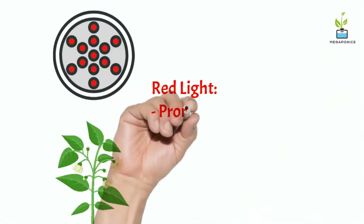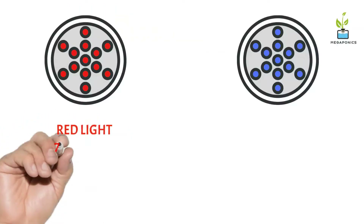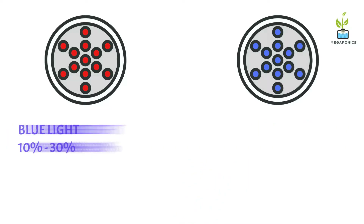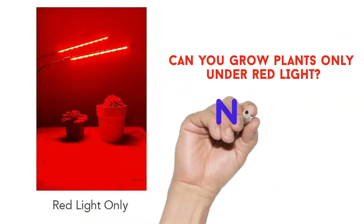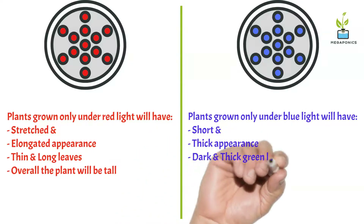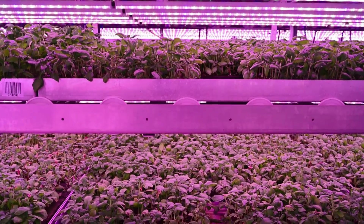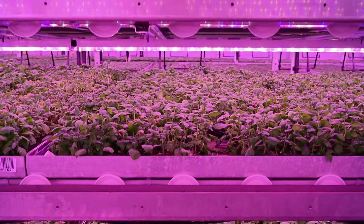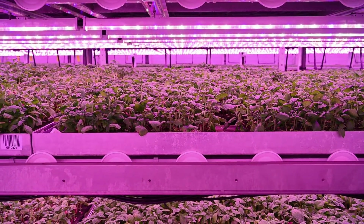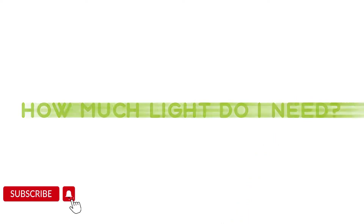Red light helps in promoting flowering and fruiting development. Recent studies show that you can grow with 70 to 90 percent red light, but you cannot grow only under red light. If you do, plants will have a stretched and elongated appearance — the leaves will be long and thin and the plants will be weak and tall. Red light should be accompanied by blue light and other colors within the PAR range for better results.